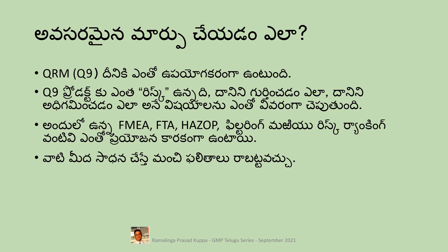How to address the change control is described in this slide. ICH Q9, the quality risk management guide, is very useful for evaluation of the impact on quality of the product. There are nine tools described in the guideline. FMEA or FMECA, FTA, HAZOP, filtering and risk ranking are routinely used for pharmaceuticals. In FMEA, risk is evaluated in a qualitative way like low, medium or high. Whereas in FMECA, scoring is given for criticality of the risk. However, the outcome would be the same in any case. You will get good results after a couple of attempts of evaluation through the QRM guideline.